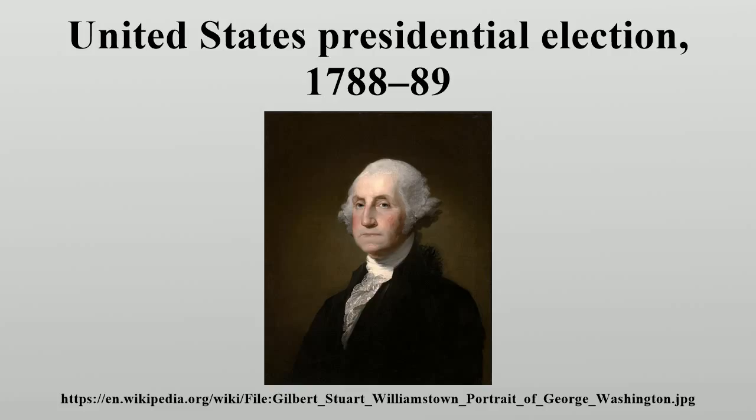The enormously popular Washington essentially ran unopposed. The only real issue to be decided was who would be chosen as vice president. Under the system then in place, each elector cast votes for two persons. If a person received a vote from a majority of the electors, that person became president, and the runner-up became vice president. All 69 electors cast one vote each for Washington, and their other votes were divided among 11 other candidates. John Adams received the most, becoming vice president.